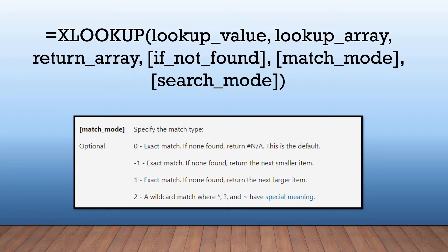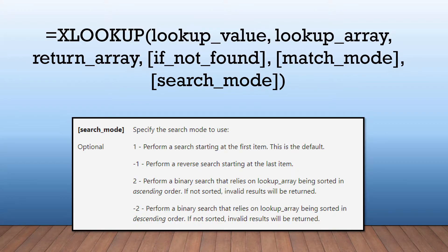A match mode of positive one means exact match, but if none is found, it returns the next larger number. A match mode of two is for wildcard matching, where characters like the asterisk and question mark have special meaning.